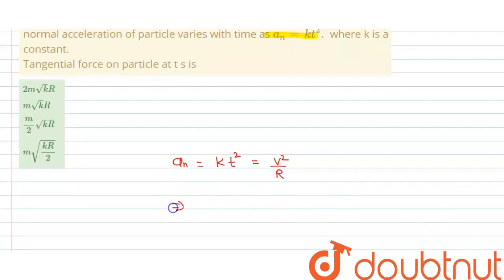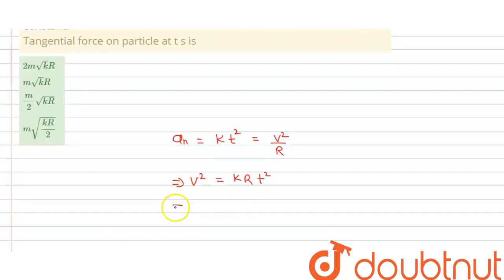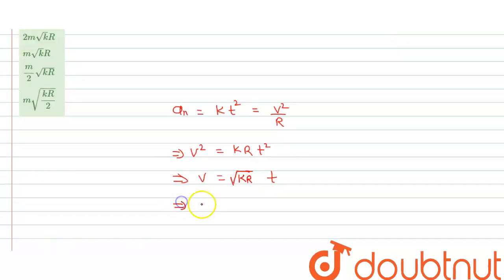So from here we can calculate v² equals kr into t². So from here we can write v equals √(kr) times t.